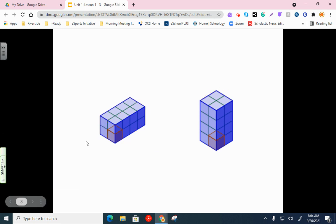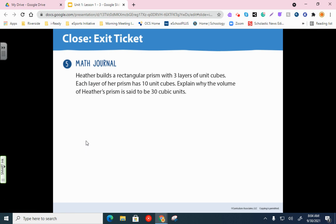All right, now we'll move on to the last question. All right, Heather builds a rectangular prism with three layers of unit cubes. Each layer of their prism has 10 unit cubes. Explain why the volume of Heather's prism is said to be 30 cubic units. We don't even have to build this one because all the work's been done for us. So let's underline three layers and underline the phrase, each layer has 10 unit cubes. This is a simple one we can do in our head because we have three layers times 10 layers per cube, and that's where she would get her 30. Again, these are fairly simple. You just have to take the time just to visually see or kind of get used to, like, what they're talking about. Once you're able to see it, sometimes it's easier to understand it.